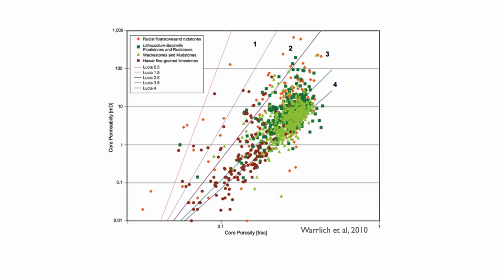If you look at the porosity versus permeability plot — this is a plot by Gerhard Werlisch, who used to work for PDO, published in 2010 (PDO is Petroleum Development Oman) — you can see that the best reservoirs, with good permeability for relatively good porosity, are in the lithocodmium bacinella mounds, but also in the rudists — the rudist floatstone and rudstone — and these have really good permeability, close to one Darcy in fact. And we also have some wackestone and mudstone that are fine-grained lithologies and typically would not be the best reservoirs, but thanks to meteoric diagenesis they become excellent reservoirs.